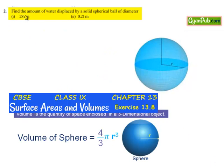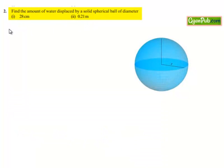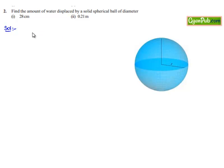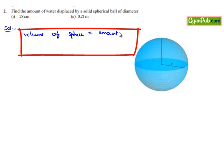Moving on to the second question: find the amount of water displaced by a solid spherical ball of diameter 28 centimeters, and second, 0.21 meters. Here the diameter of the spherical ball is given. When it is placed in water, the amount of water displaced will be equal to the volume of the sphere thrown into the water.